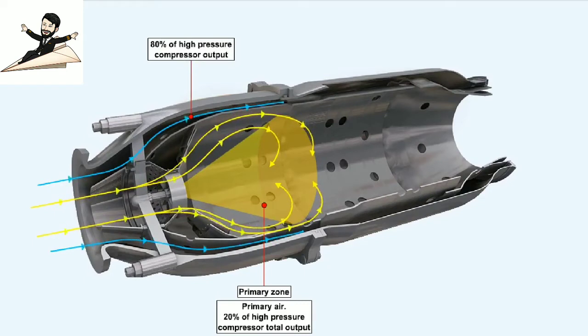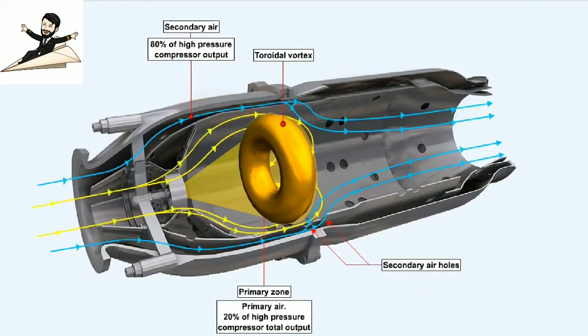The remaining 80% of the output of the high pressure compressor, air which has not been directed through the snout, goes into the space between the flame tube and the air casing. Some of this remaining air, approximately another 20% of the output of the high pressure compressor, is allowed into the flame tube through secondary air holes. This air is called secondary air, and it reacts with the primary air which is flowing through the swirl vanes to form a toroidal vortex. The toroidal vortex stabilizes and anchors the flame, and prevents it being moved through the flame tube, away from the fuel nozzle area.